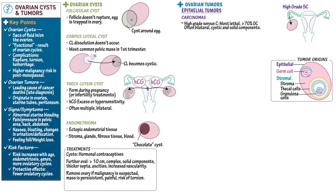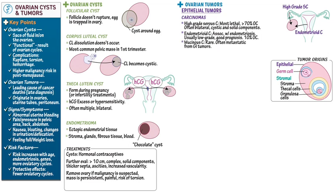Endometrioid carcinoma is the second most common ovarian cancer, accounting for approximately 10% of cases. It's usually low-grade with good prognosis. These tumors are thought to arise from transformed endometrial tissues and are associated with endometriosis and Lynch syndrome. Rarer ovarian carcinomas include mucinous carcinoma, which is often the result of metastasis from gastrointestinal tumors, and clear cell carcinoma, which is associated with endometriosis.